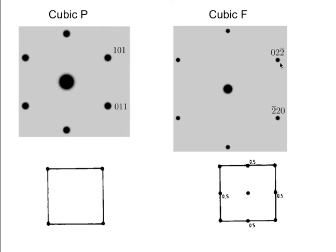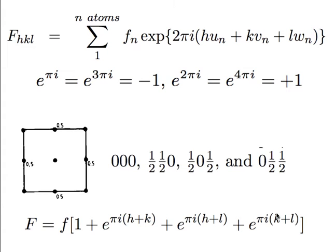We have constructed reciprocal lattice sections which, when weighted with intensities, give us diffraction patterns. As we introduce more structure into the unit cell we lose some reflections or the intensities change. For the [111] patterns, both cubic P and cubic F appear as hexagonal patterns — changing from (011)-type to (022)-type planes does not change the angles. The structure factor calculation is a general method of working out whether a reflection should be missing: you have atoms in your unit cell each contributing scattered waves, with a certain scattering factor f for each atom.